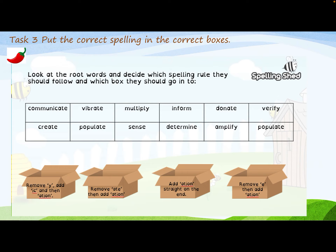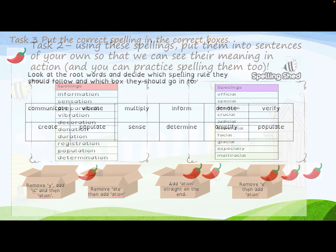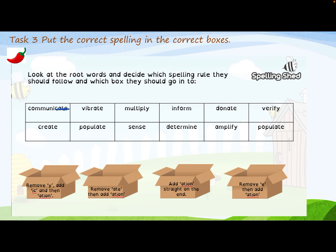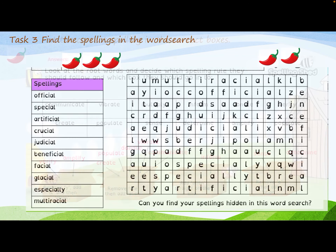Our third task is to put the correct spelling into the correct boxes. I want you to look at the root words and decide which spelling rule they follow. Which ones do we remove the 'y' and add '-ication'? Which ones do we remove '-ate' and add '-ation' straight at the end? Or do we remove the letter 'e' and then add '-ation'? For example, 'communicate' — how do we add '-ation' for it to become 'communication'? For 'communicate', we would take off the '-ate' and then add '-ation' to get 'communication'. Put them in the right box.